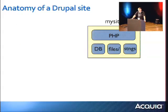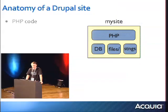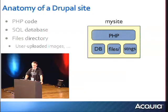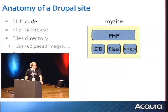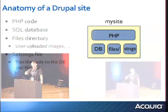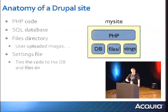Before I begin, this is probably a review for most of you, but just to get some terminology clear, I'm going to talk about the anatomy of a Drupal site. Every Drupal site consists of four things: the PHP code which runs the site, an SQL database which is the primary Drupal database, a files directory for user-uploaded images, avatars, PDFs, and static files you attach, and then the settings file which ties the database and the files to the code.